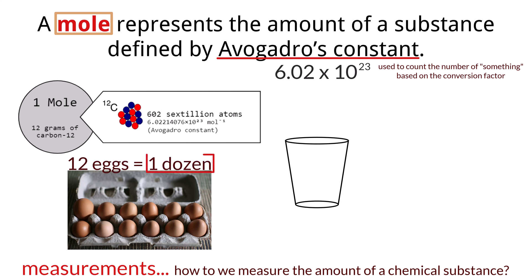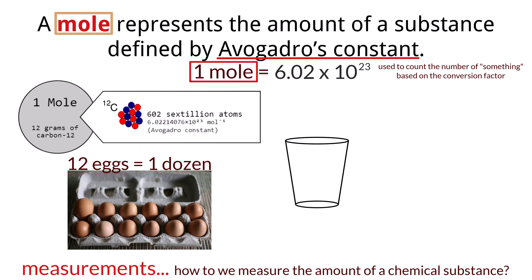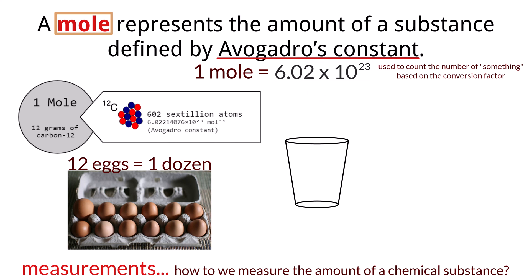So if you had one dozen eggs, it would mean you have 12 eggs, and if you have one mole of eggs, it would mean you have 6.02 times 10 to the 23rd eggs — and that's a lot of eggs. As you can see, with the large positive exponent of 23, this value is very, very large.